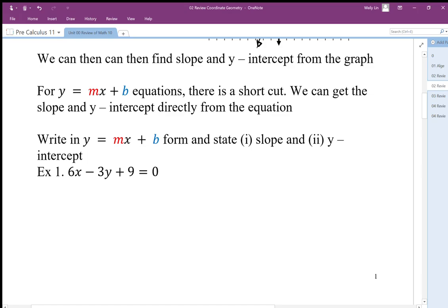This is called the general form equation. If we want to write the slope-intercept form, all we do is solve for y, and in that form y equals, we can then identify the slope and y-intercept. So when I rearrange this equation...